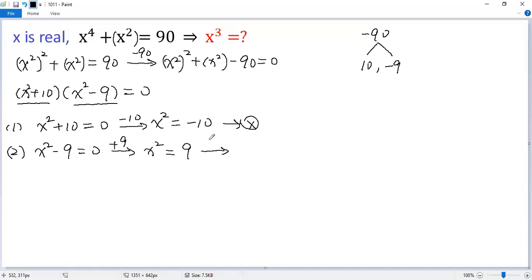we get x² = 9. Taking the square root of both sides, we get x = ±3.